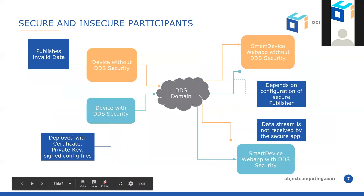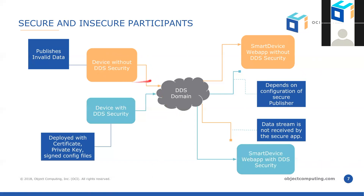Before we see the demo, let's look at it as a deployment. To show what DDS security can do, we'll have two instances of the device simulator running: one without DDS security enabled, and one with DDS security enabled. The security configuration includes a certificate, private key, and signed configuration files, but aside from that there's nothing different in the software. To simulate a scenario that requires security, the device without DDS security publishes invalid data — an imposter on the network sending values that are 100 times higher than they should be.